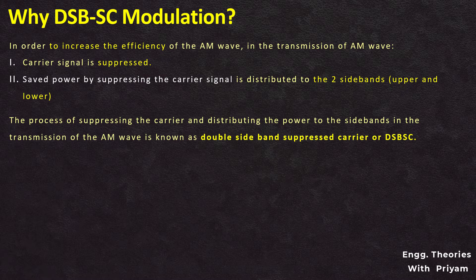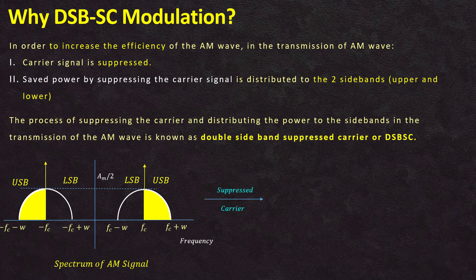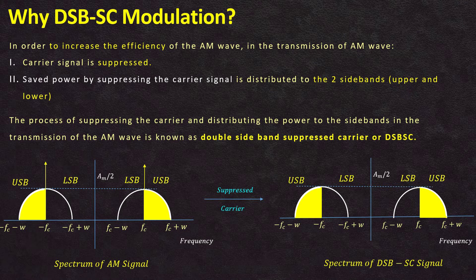The process of suppressing the carrier signal and distributing the power to the sidebands is known as double sideband suppressed carrier or DSBSC modulation. After suppressing the carrier signal, we will have two sidebands at frequencies ±(FC + FM) and ±(FC − FM), but no carrier signal at frequency +FC or −FC.